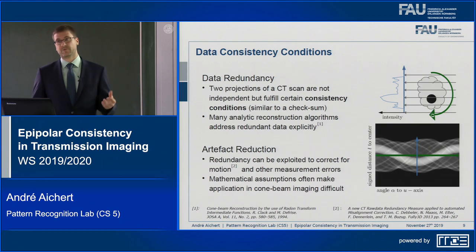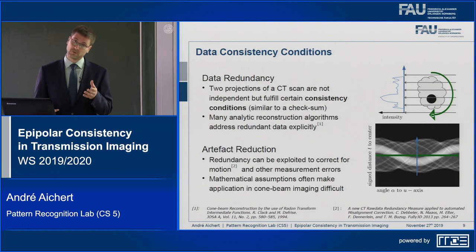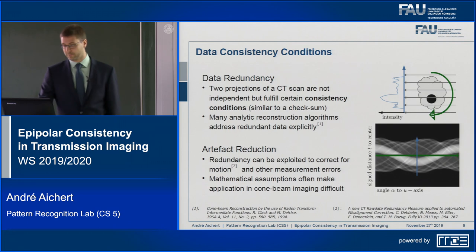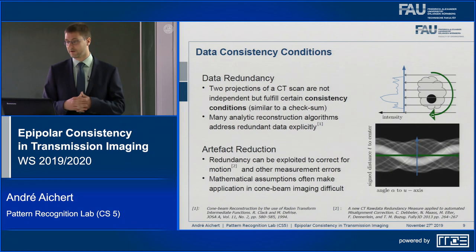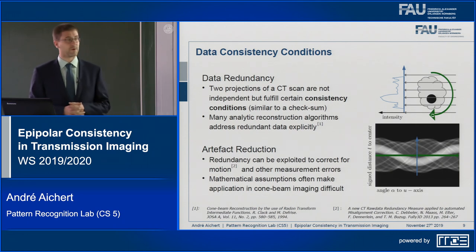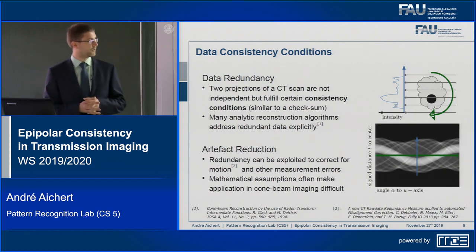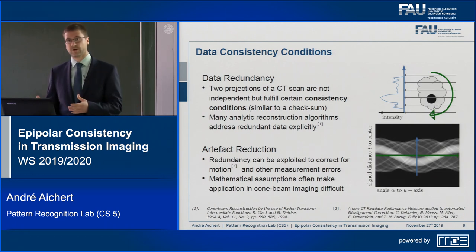Redundancy can be exploited to correct for motion and other measurement errors — same idea as the checksum. If you have redundant information you can verify that it is the same; if it is not, you can adjust some acquisition parameters to make the redundant information as similar as possible. This is also work by Christine Debler, which is probably the most important reference in this talk, because it's where the idea for the epipolar consistency conditions came about.